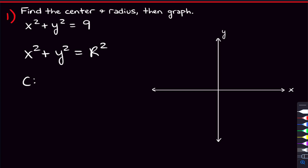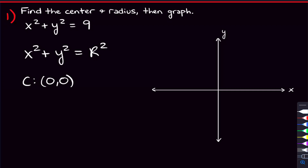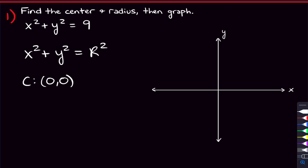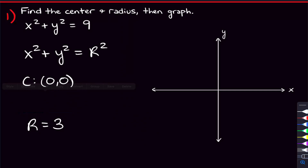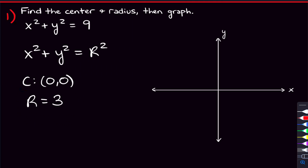This is the equation for a circle whose center is at the origin, so its center is going to be (0, 0). The radius comes from the r squared term. In this case, it's 9. So if the radius squared equals 9, we square root both sides and get the radius equals 3. We won't have a plus or minus because the radius can't be a negative number — that wouldn't make sense. So the center is (0, 0) and the radius is 3.